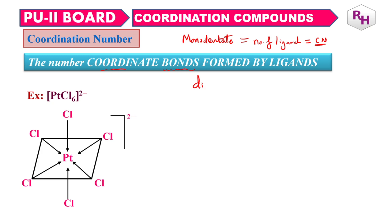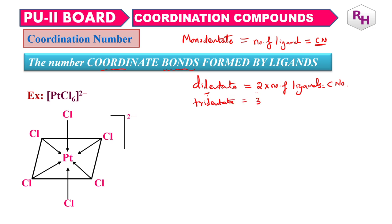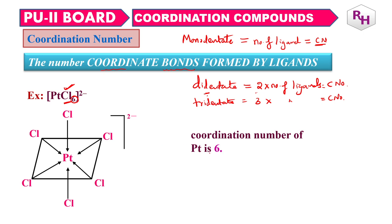Very simple. If it is a bidentate ligand, the coordination number is 2 multiplied by the number of ligands, because one bidentate ligand can form 2 bonds. Similarly, if it is a tridentate ligand, it is 3 multiplied by the number of ligands equal to the coordination number. So for PtCl6 2-, Cl is a monodentate ligand, so the coordination number is 6.